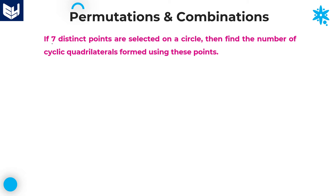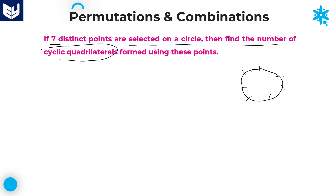If 7 distinct points are selected on a circle, find the number of cyclic quadrilaterals formed by using these points. First of all, to solve this problem, we need to know what is meant by cyclic quadrilaterals.